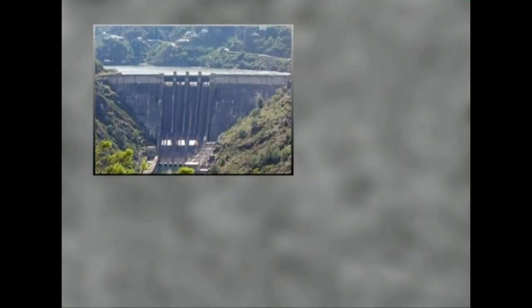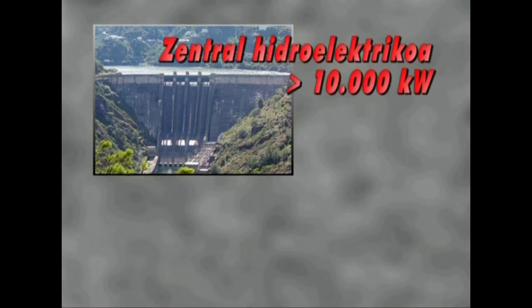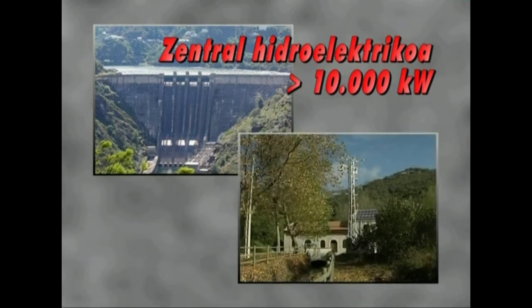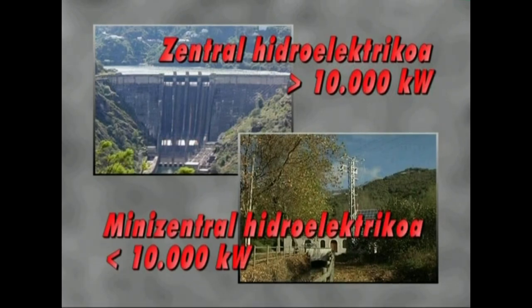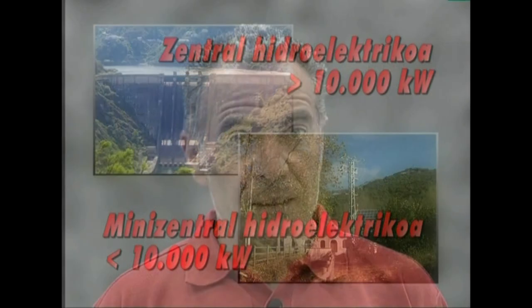Laburbilduz, energia hidroelektrikoa sortzen duen instalazioari zentral hidroelektriko deritzo, eta haren bihurtze-almen maximoari potentzia instalatua. Hamar mila kilowatterainoko potentzia instalatua dutenei mini zentral hidroelektriko deritze, eta hori baino potentzia handiagoa koei zentral hidroelektriko. Ikuspuntu honetatik, mini zentralen hainbat alderdi sakonduko ditugu bereziki, gure artean ugarienak direlako.